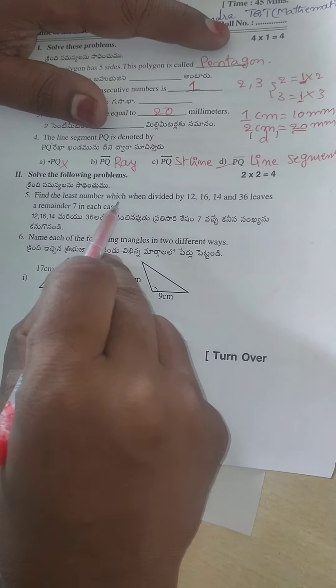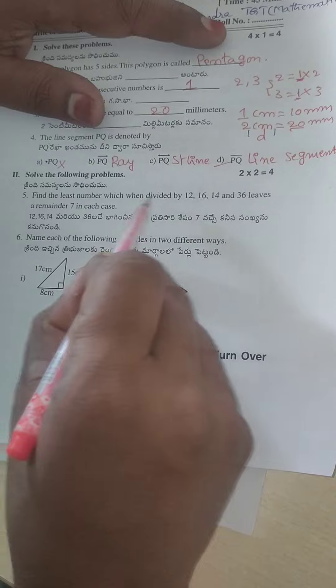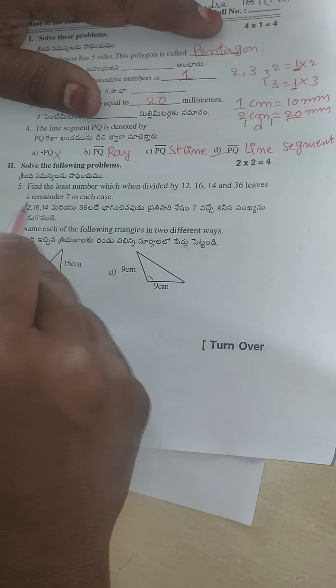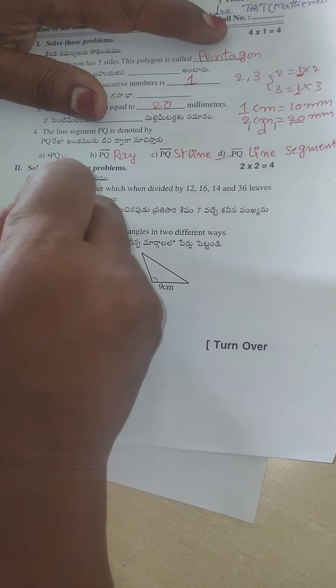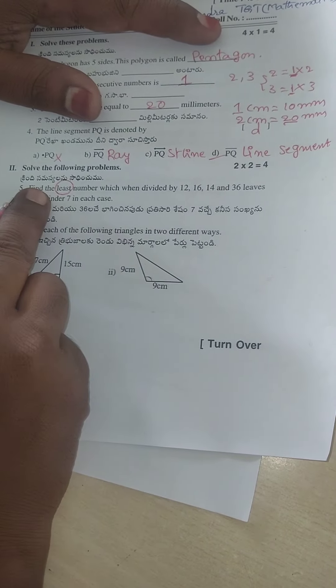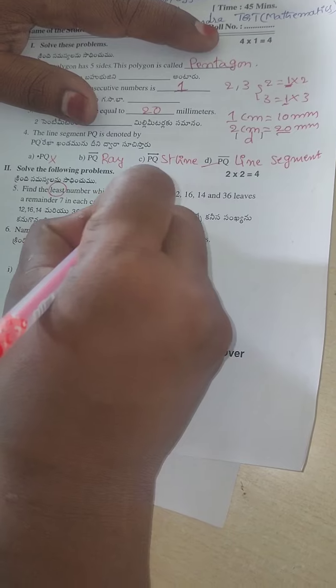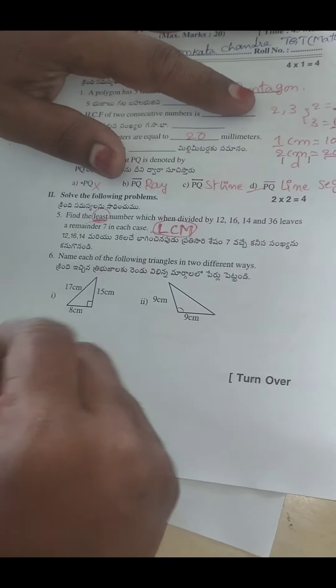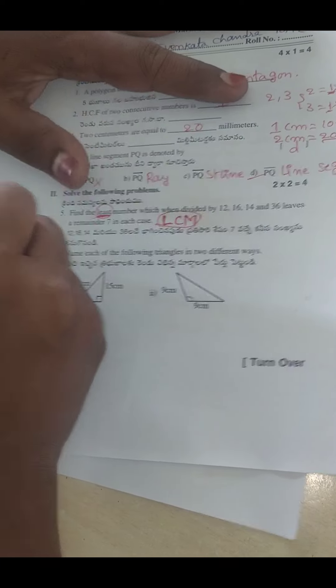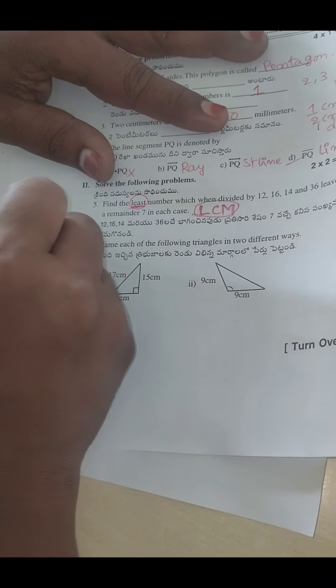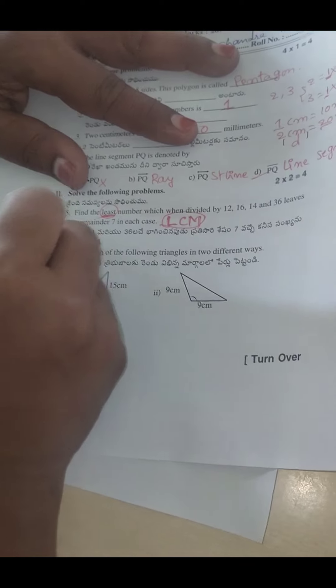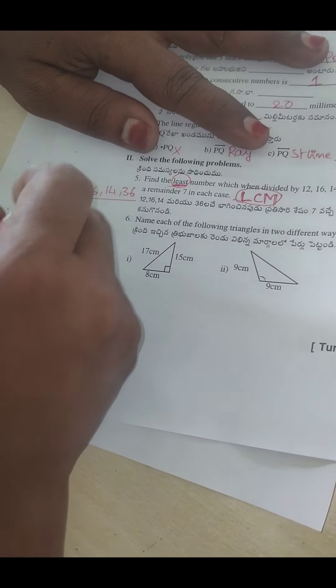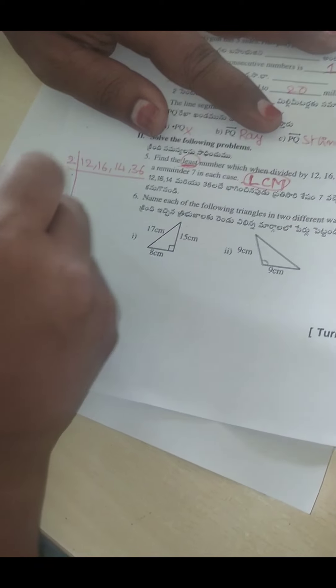Find the least number which when divided by 12, 16, 14 and 36 leaves a remainder 7 in each case. Here, the word least means you have to find the LCM. So this is hint. Let's take the given numbers: 12, 16, 14, 36. All the even numbers. So first take two tables.